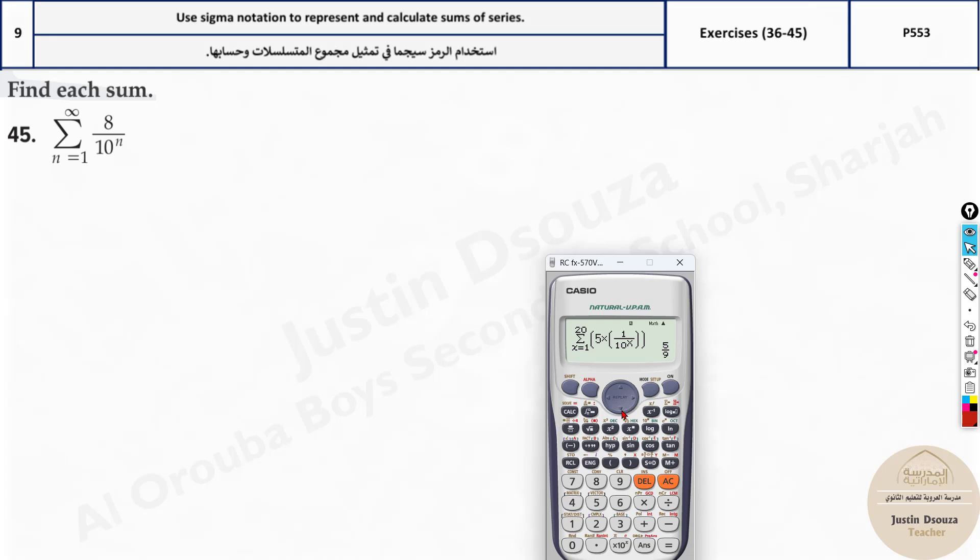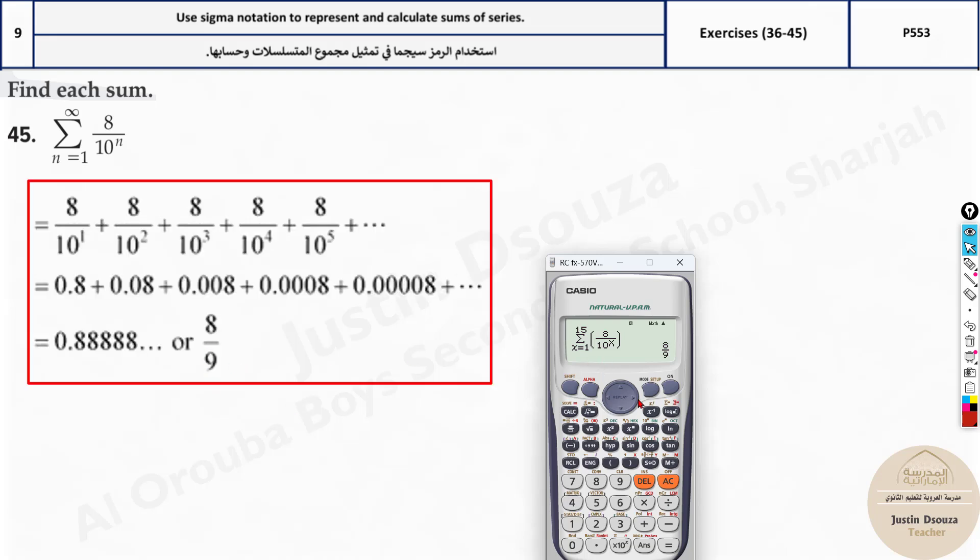Even over here, it's the same thing. Shift and the log symbol. Type the equation by fraction: 8 divided by 10 to the power x. And it starts at 1 over here, and it ends at infinity. So I will just start with 15. It's 8 by 9, so the final answer is 8 by 9.